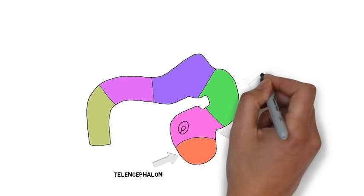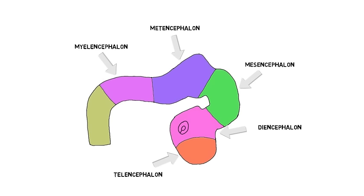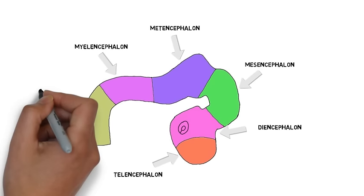The mesencephalon does not subdivide any further, and will become the midbrain. The rhombencephalon will subdivide into the metencephalon and the myelencephalon. The metencephalon will become the pons and the cerebellum, and the myelencephalon will become the medulla. The spinal cord will still form from the end of the neural tube.